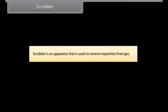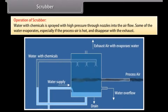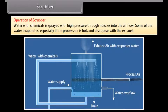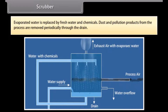A scrubber is an apparatus used to remove impurities from gas. Water with chemicals is sprayed with high pressure through nozzles into the airflow. Some of the water evaporates, especially if the process air is hot, and disappears with the exhaust. Evaporated water is replaced by fresh water and chemicals. Dust and pollution products are removed periodically through the drain.